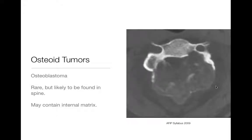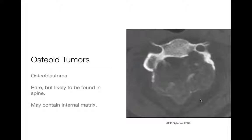An uncommon osteoid tumor is osteoblastoma. These are pretty rare. They usually appear as lytic lesions, though they can appear as sclerotic lesions. They often have some internal matrix associated with them, and they tend to occur in the spine — though they will occur in long bones as well. This is an example of an osteoblastoma in the spine, which is a common location for them when they occur, though remember they're pretty rare tumors all in all.